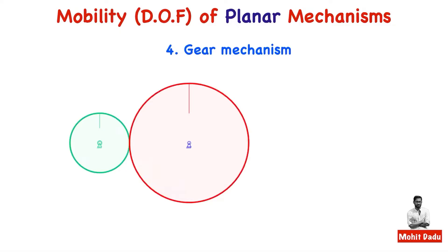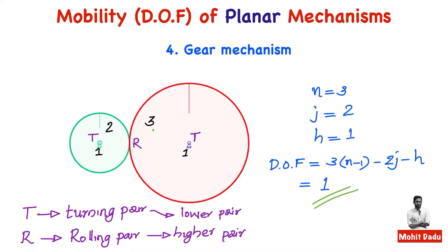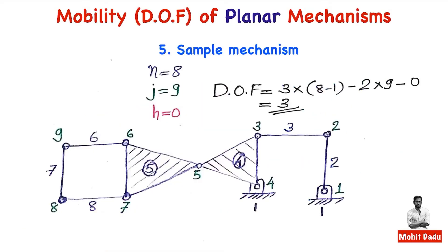For a gear mechanism with two gears fixed to the ground: number of links n = 3 (ground, gear 1, gear 2). There are two turning pairs (lower pairs), so j = 2. The meshing gears make point or line contact, forming one higher pair, so h = 1. DOF = 3(3 − 1) − 2(2) − 1 = 6 − 4 − 1 = 1. The meshing contact is a rolling pair, which is a two-degree-of-freedom higher pair, giving degree of freedom of one for this gear mechanism.